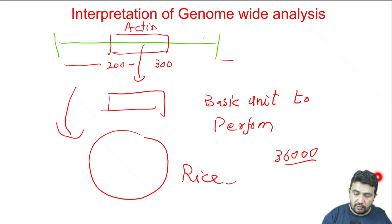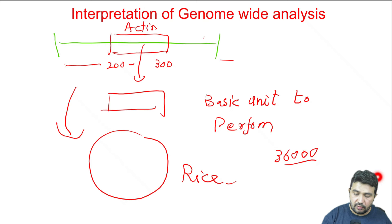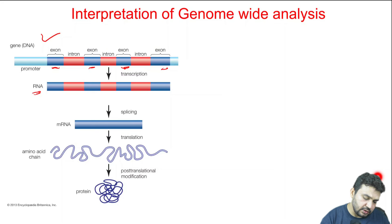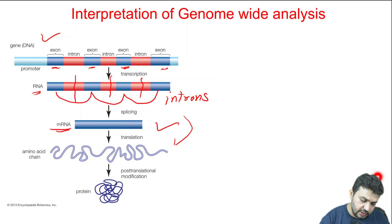Let me show you with the help of diagrams. Here you can see we have the gene, with the coding parts — exon, exon, exon, exon — and the introns in red which I have already explained. During messenger RNA formation, the introns are spliced out and the blue exon parts are joined together to form a messenger RNA, which is then converted into an amino acid chain to form the final protein structure.